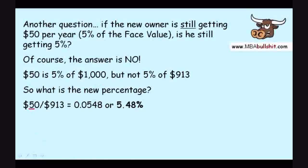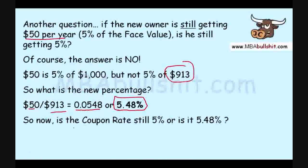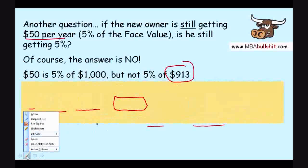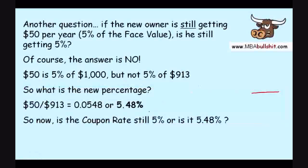In terms of dollars, the new owner is still getting the same $50. But as a percentage: $50 per year divided by $913 equals 0.0548, or 5.48%. So the question is, is the coupon rate still 5% or is it 5.48%? The answer is that the coupon rate is still 5%, but the current yield is 5.48%. So 5.48% is called the current yield, while the coupon rate remains 5%.